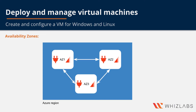Compare this with the availability set, where the fault domain and update domains only deal within a particular data center, but availability zones go beyond a single data center and provide resiliency across an entire region. The physical separation of availability zones within a region protects your applications from data center-level failures, and zone-redundant services replicate your applications and data across availability zones to protect from single points of failure.